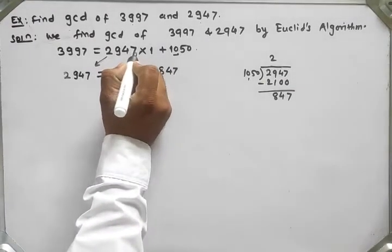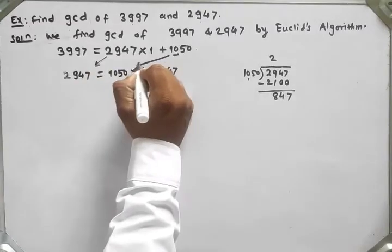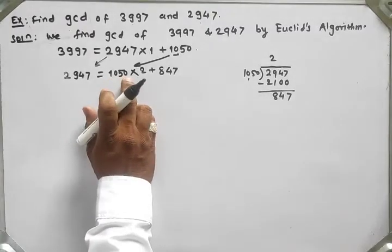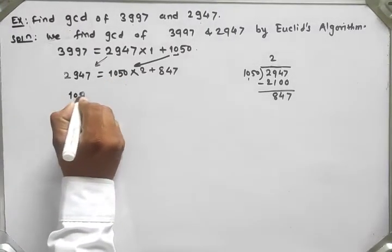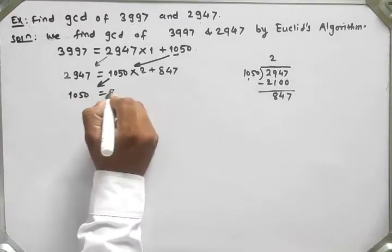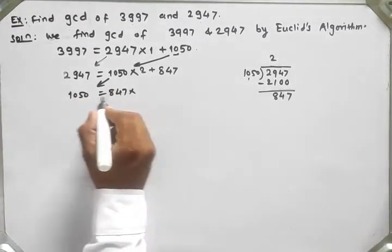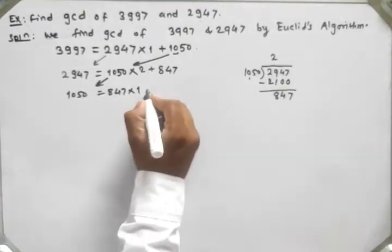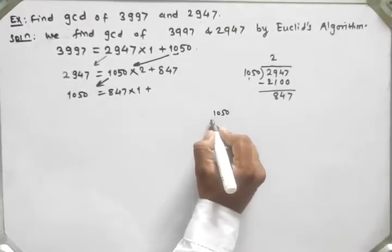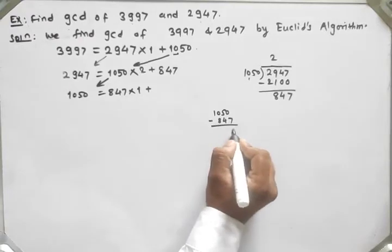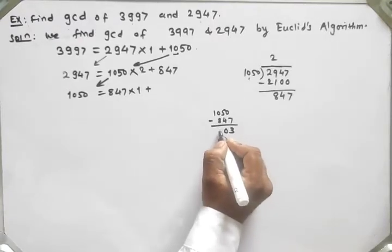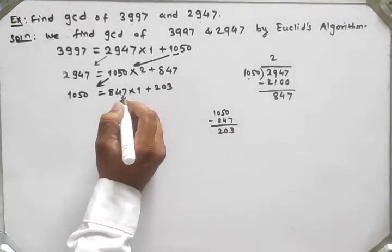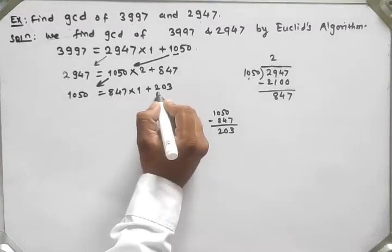Again applying the division algorithm between 1050 and 847. So 1050 divided by 847: quotient is 1, and remainder is 1050 minus 847, which is 203. Then applying the algorithm between 847 and 203.